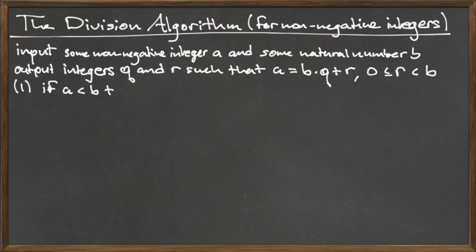The first step in this algorithm is the conditional statement: if a is less than b, then return the values 0 and a, where 0 is returned for the value of the quotient and a is returned for the value of the remainder. Remember that following any return statement, the algorithm is immediately terminated. So if the conditional statement is true, we return the values 0 and a and do not proceed further with the algorithm.